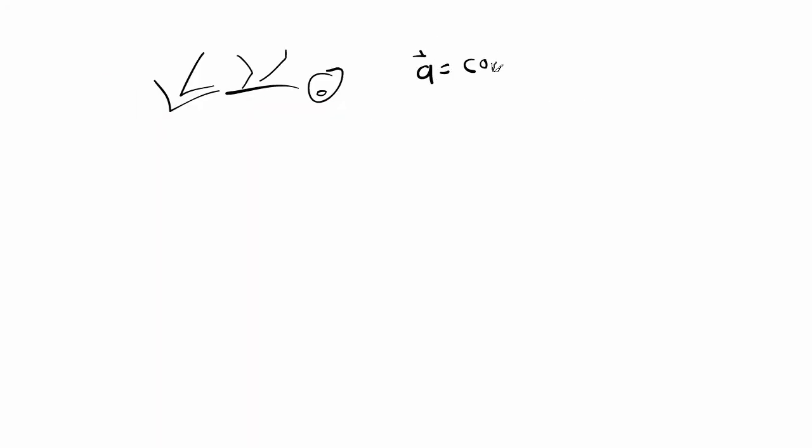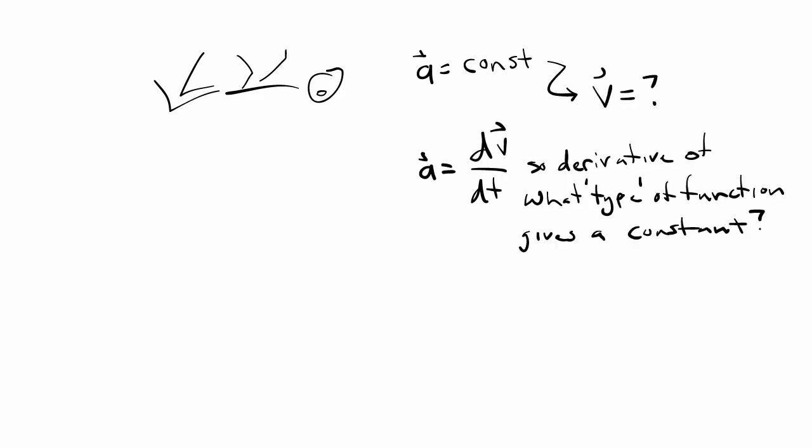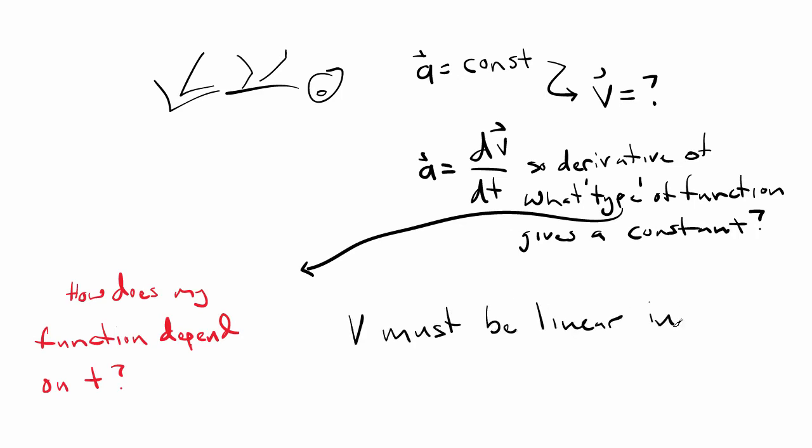Since we know that acceleration is constant, what can we say about the object's velocity? Well since acceleration is the derivative of the velocity with respect to time, then the velocity must be changing at a constant rate.